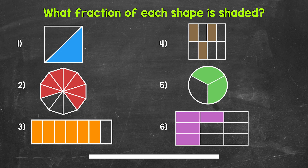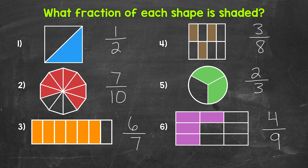Okay, so that's two minutes. Let's take a look at the answers. For number one, we have one half. For number two, seven tenths. Number three, six sevenths. Number four, three eighths. Number five, two thirds. And lastly, number six, four ninths.